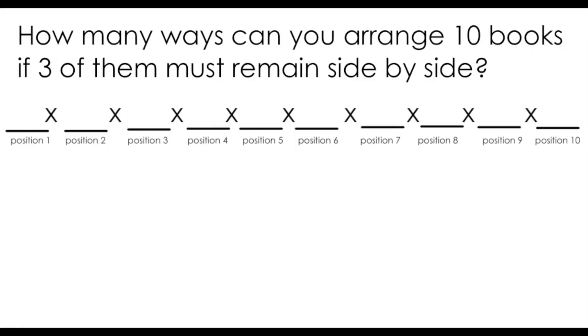I always find the best way to solve problems like this where you're arranging some number of items is to write out the number of positions that are going to be filled by your items. We know we have 10 books in total, so I'm going to write out 10 positions. I find this helps me visualize the number of possible arrangements in the scenario.